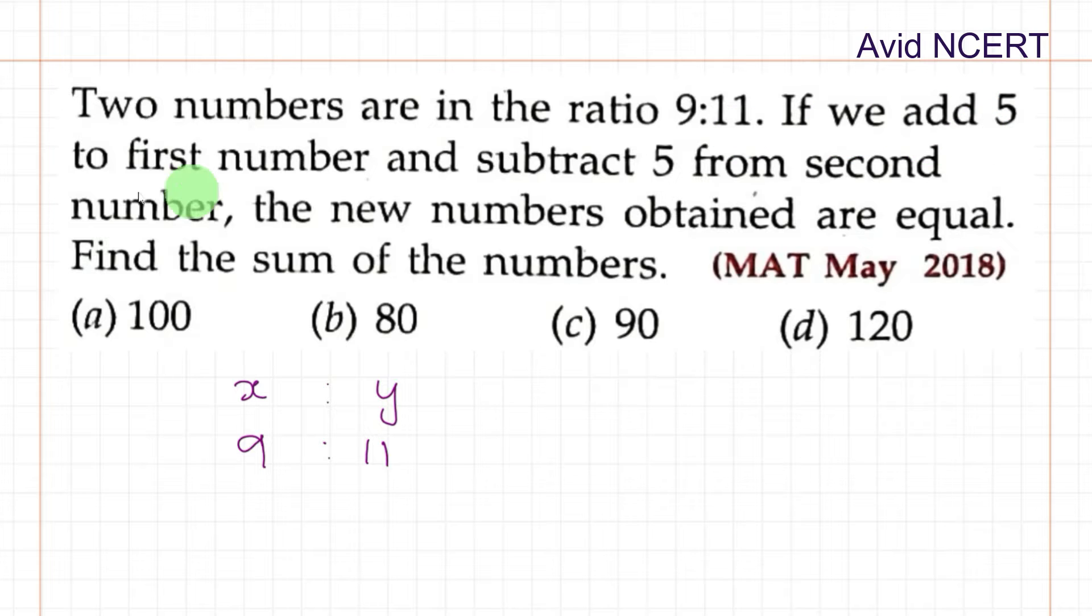Now from the next sentence, we add 5 to the first number, that is adding 5 to x which is x plus 5, and subtracting 5 from the second number which is y minus 5. The new numbers obtained will be equal, which means x plus 5 will be equal to y minus 5.